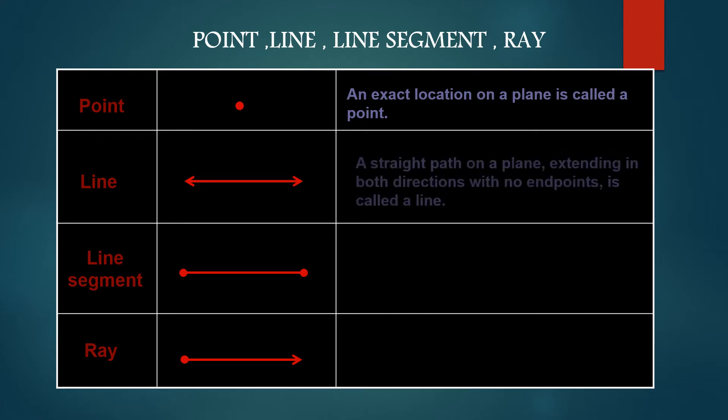Line is a straight path on a plane extending in both directions with no endpoints. No endpoints for a line and it extends on both sides.